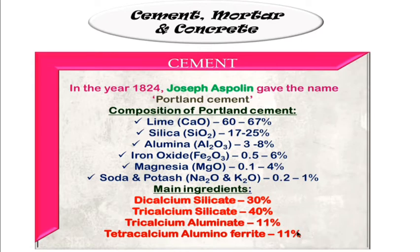Why do we need to know these percentages? It is to determine whether the cement is good quality or adulterated. If the silica is within the expected range, it is fine. But if a sample shows 50 percent silica, it is considered adulterated, and there won't be a good structure — the building may collapse.